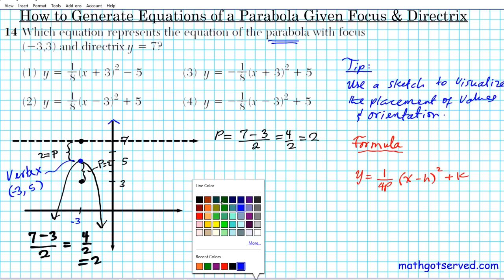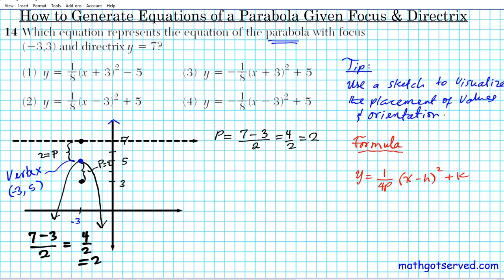So we just need the vertex (h, k), we need the vertex and p, and we're good to go. The vertex is (-3, 5). If we put it into the equation, this is h and this is k. So h is -3, k is 5.